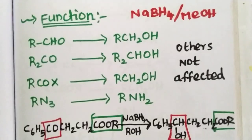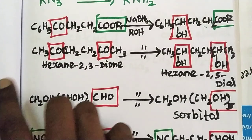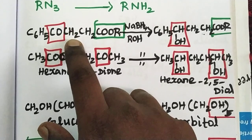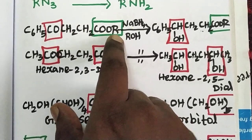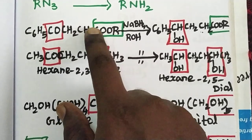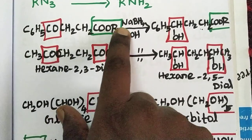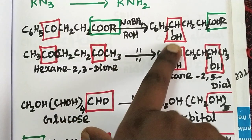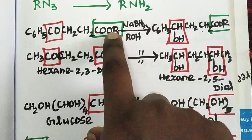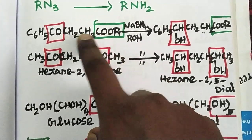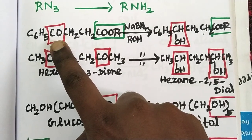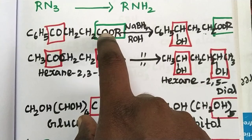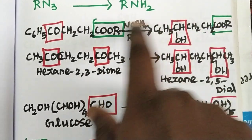Let's look at an example. The first example is C6H5COCH2CH2COOR — there is an ester group and a keto group. We use sodium borohydride. The keto group is a secondary group and is reduced to secondary alcohol. The ester group is not affected. If you want to change it, you can mark it in the box.